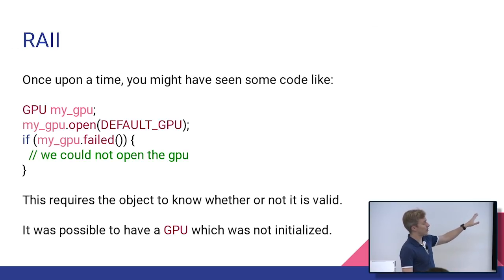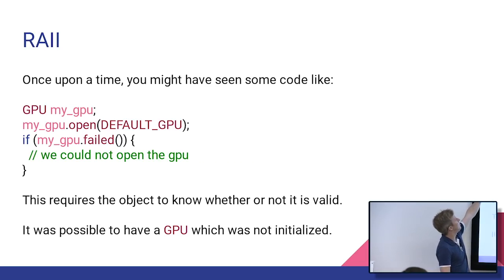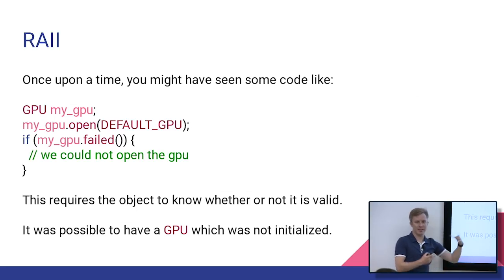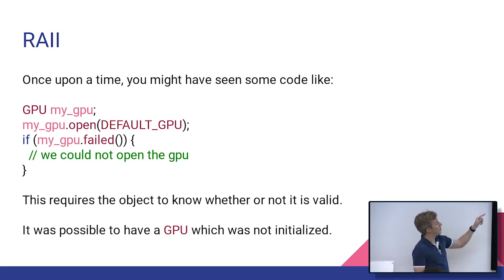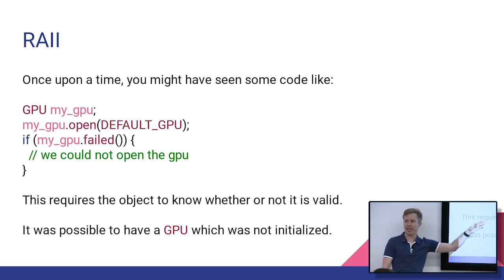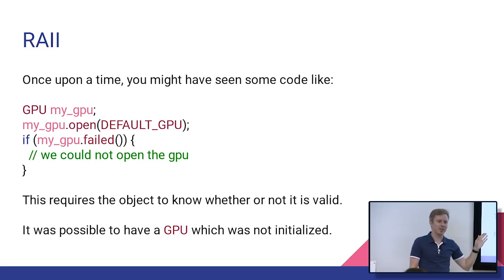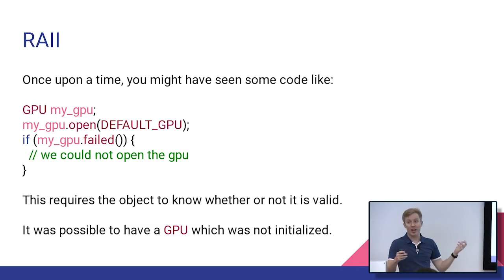So this is old code that you may have seen. This is the opposite of RAII. So we have a GPU instance, and we call .open to get this GPU. And that .open call may have failed. And then we have to call, well, if it fails, do some error handling. This is the opposite of RAII, because we tried to acquire the resource, but we failed. The initialization isn't acquisition or acquiring. So this is the opposite of what we want.